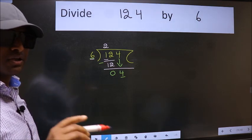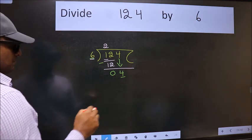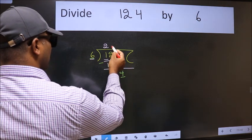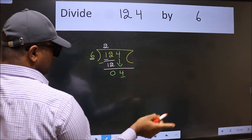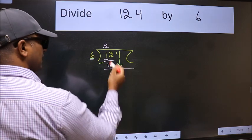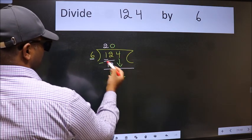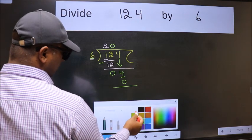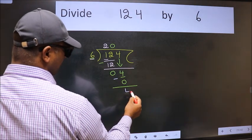Instead of that, what you should think of doing is which number should we take here. If I take 1, we will get 6. But 6 is larger than 4. So what we do is we take 0. So 6 into 0 is 0. Now we should subtract. We get 4.